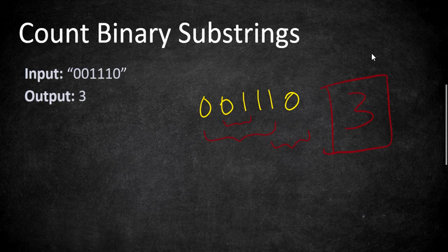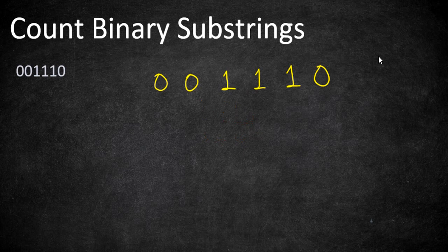So how are we going to approach this? We will use two pointers: 'previous' and 'current'. Previous is fixed at any digit, and current increments every time it encounters the same digit, keeping track of the length of consecutive zeros or ones. Once a different digit is found, we swap: current resets to one and previous takes the current length.